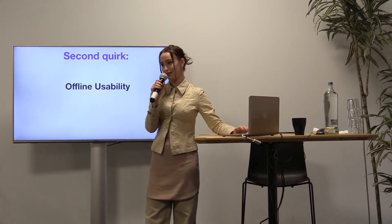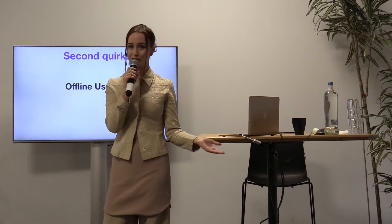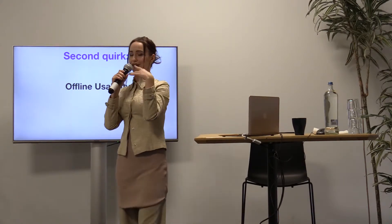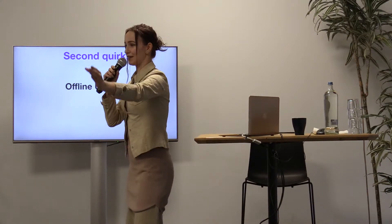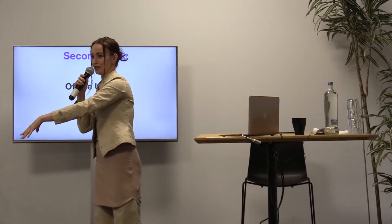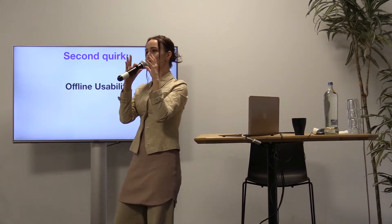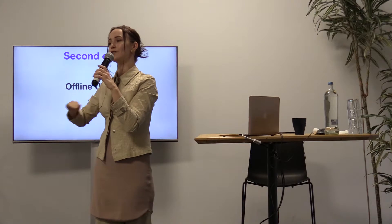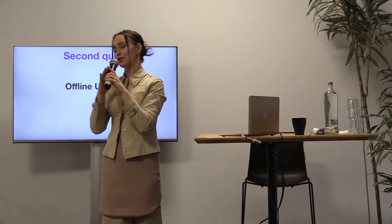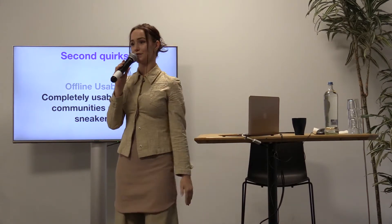The second quirk is offline usability — one of the most interesting ones, and it applies to DAT, IPFS, and Scuttlebutt. It combines torrent-like sharing with version control like Git and a distributed ledger like some blockchains. You get a collaboration where you can be offline and still sync your data later with your peers, which makes Scuttlebutt very suitable for mesh networks.